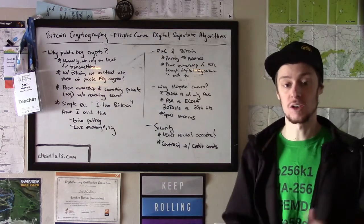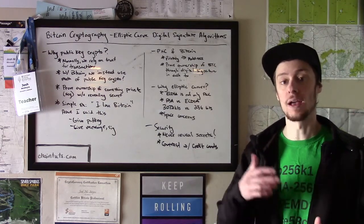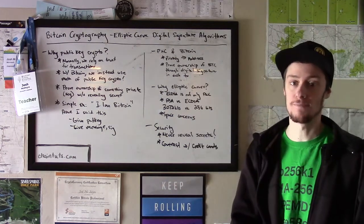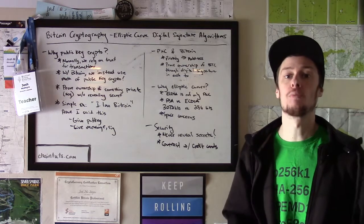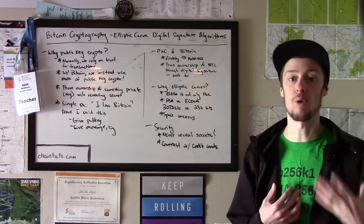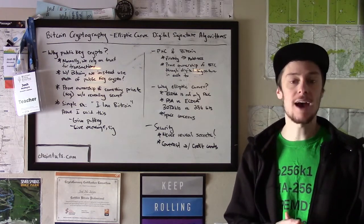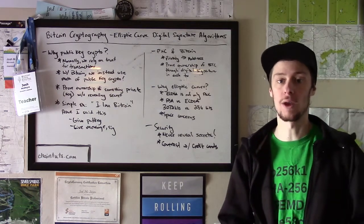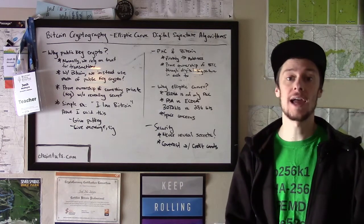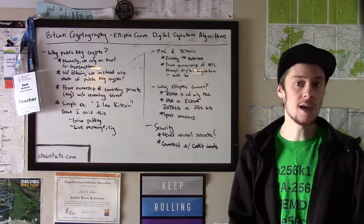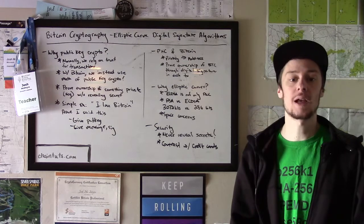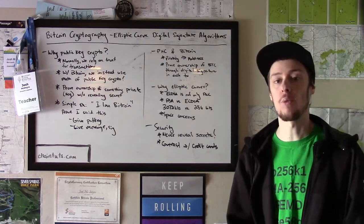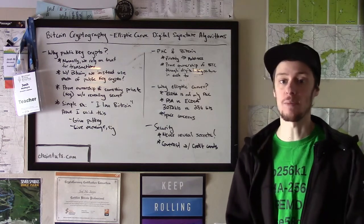And that digital signature also includes the message data of the Bitcoin transaction. So anyone on the network can now prove that I was the rightful original owner of that 0.5 Bitcoin. And that transaction is now transferring ownership to your Bitcoin address. And so on and so forth down the line as that Bitcoin is spent, every person that creates a new transaction digitally signs that using their private keys and proves to the network that they are the rightful owner of that Bitcoin.